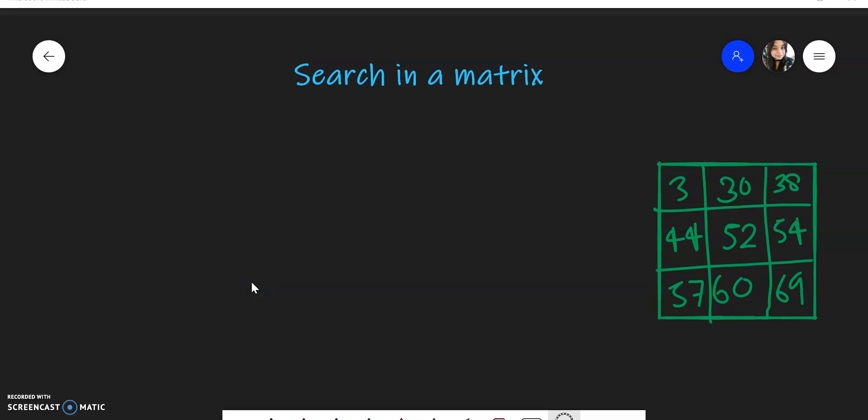So this question is search in the matrix. Basically, the problem statement is that you are given a matrix and the numbers are arranged in a sorted order with row and column. You can see here in this example, if you see each row, it has been sorted in ascending order and same is with the column, and you are given a number. So you need to return whether the number is present in this matrix or not.